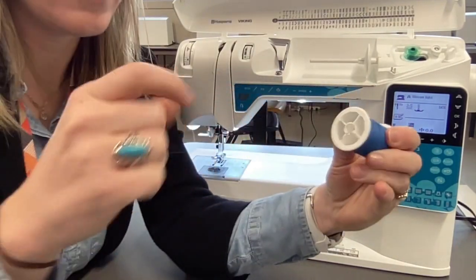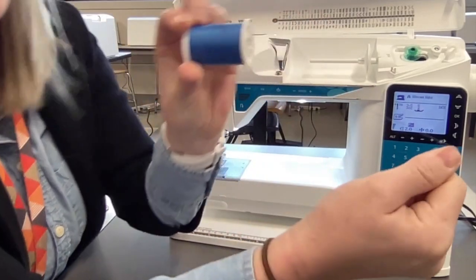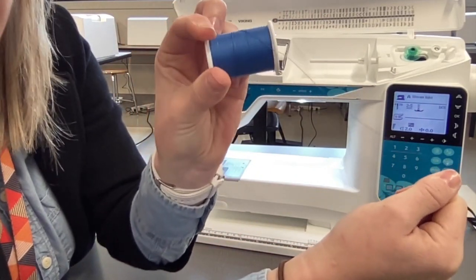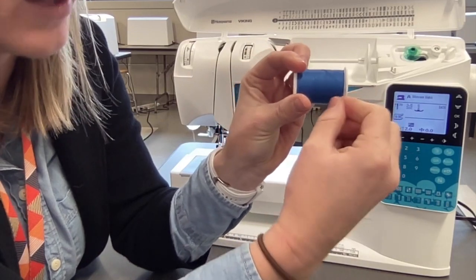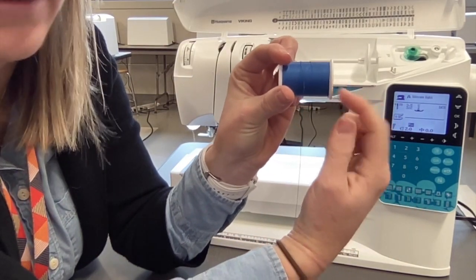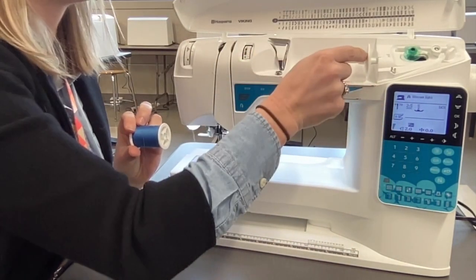And you can kind of see right there that the thread is caught in that catch. So if I know that my thread spool has one of those little pieces on it, that little slit, I'm going to make sure that it's facing to the back.